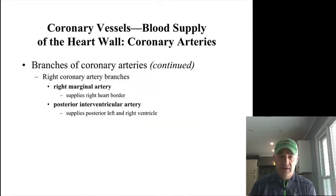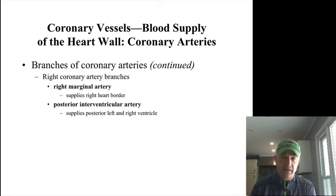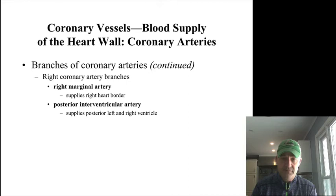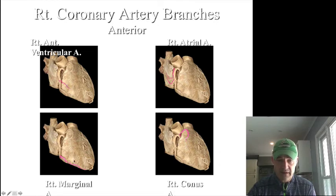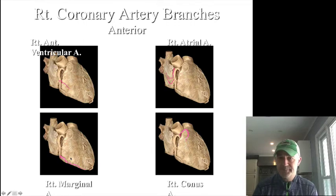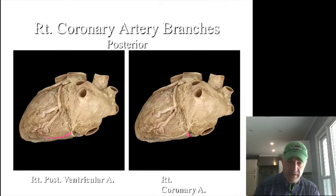Those then branch, and the right coronary artery goes to the right marginal artery and the posterior interventricular artery. You can see each of those on the image — the posterior interventricular on the interior side, the marginal on that one, and how on the back side it goes down to the back side of the atria.